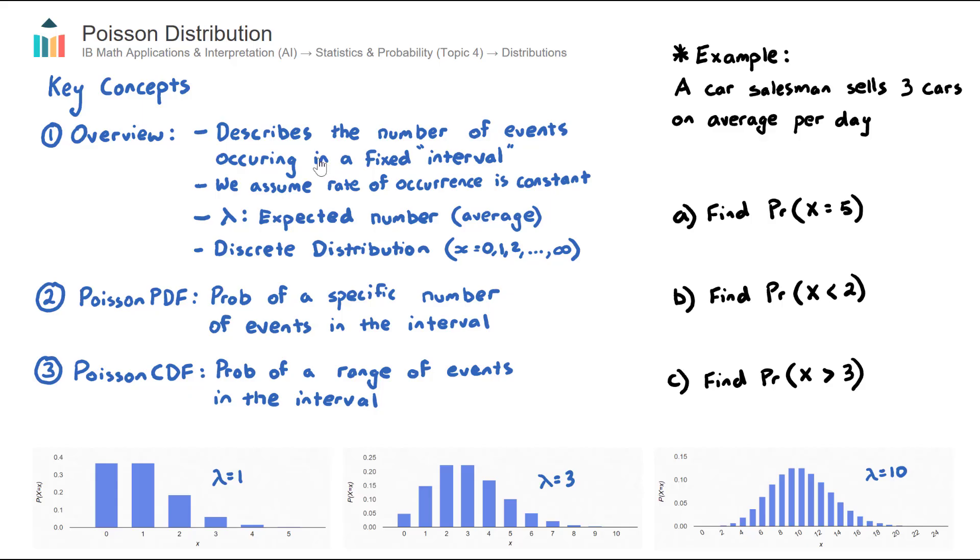A Poisson Distribution describes the number of events occurring in a fixed interval. The interval could be time, for example events per hour or per day, but it could also be other units of measurement like area, such as a square kilometre, or volume, like a litre of water.